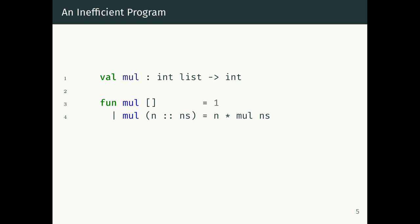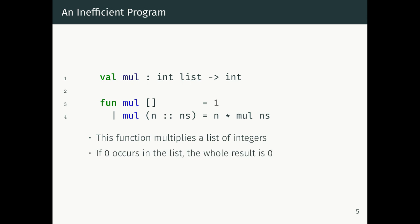As a warm-up example for programming with continuations, let's look at this program. It takes a list of integers and produces a new integer by multiplying all the elements of the list. If we have an empty list, we return one. If we have a cons, we multiply n by multiplying all the elements of the tail. This is the kind of thing you'd write in your first week of a programming course. And one interesting property of multiplication is that if a zero occurs anywhere in the list, the whole result is zero.